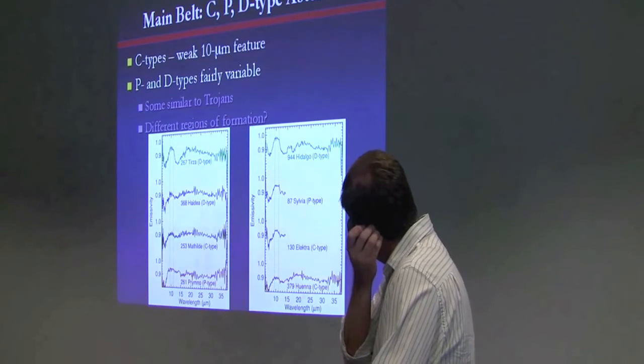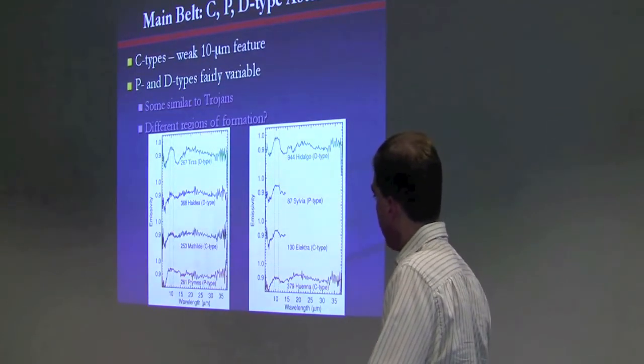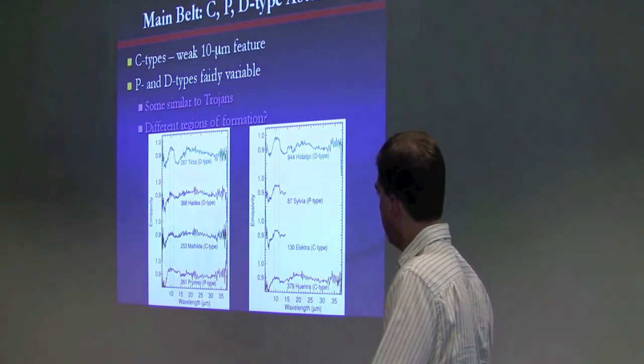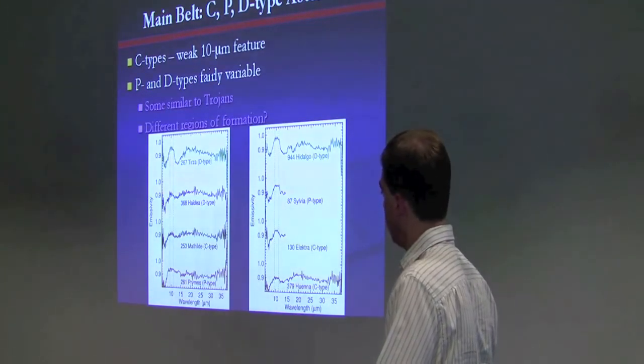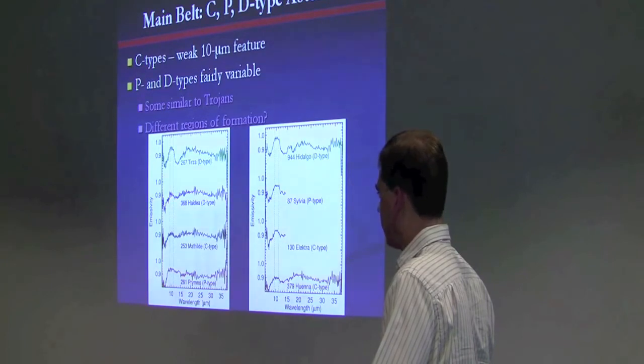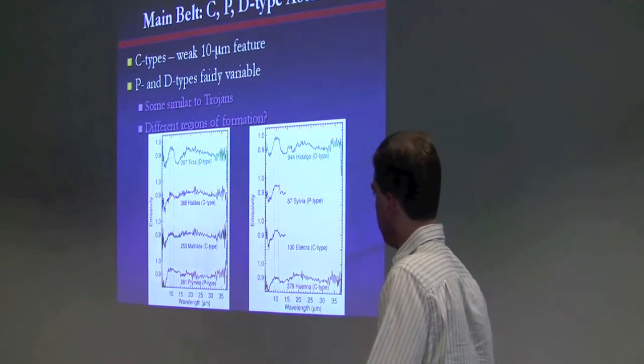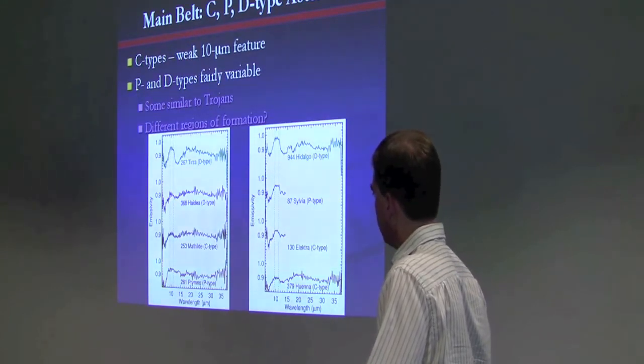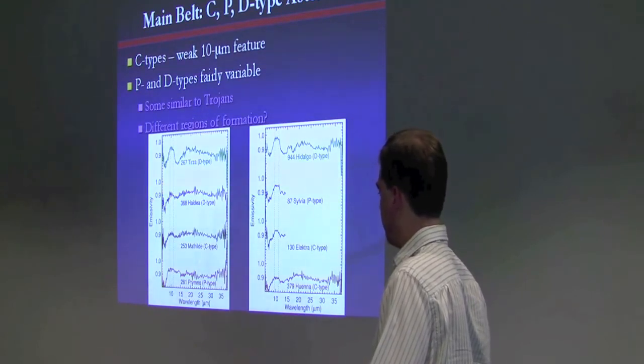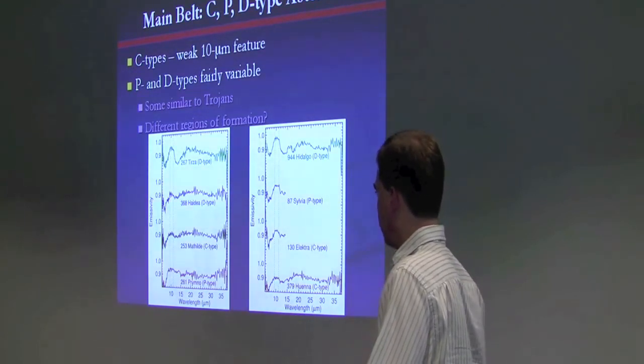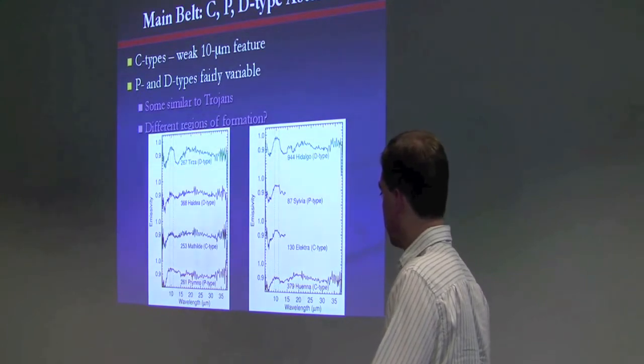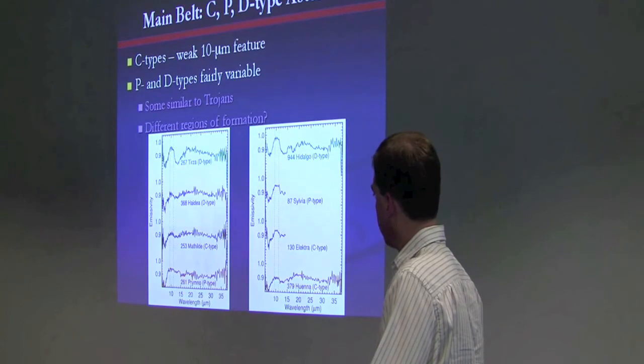Main belt C, P, and D-type asteroids tend to show a variety of spectral shapes. The C-types tend to have a relatively small 10-micron feature, whereas the P and D-types range from large Trojan-like features to smaller features with this different shape, which is most likely also due to phyllosilicates on the surface of this D-type asteroid. Once we get a chance to go through detailed analysis of each of these objects, we might begin to see patterns in the types of features, and perhaps it's indicative of different regions of formation for the different types of objects. That's one hypothesis that's been thrown out that we'll be able to test with these data.